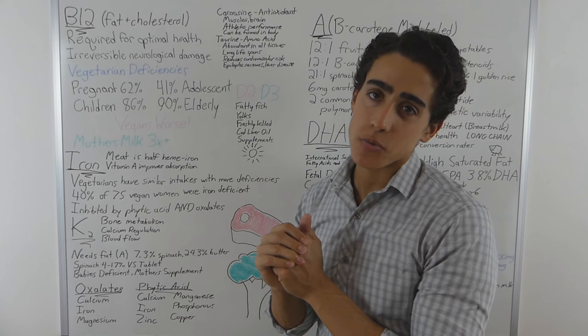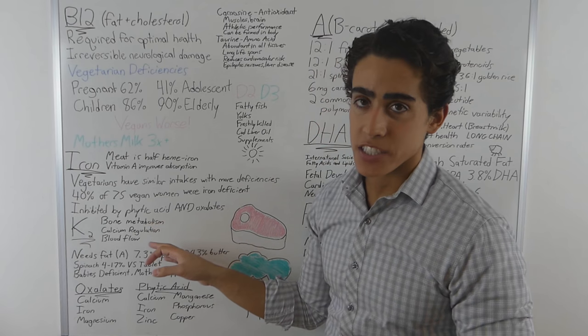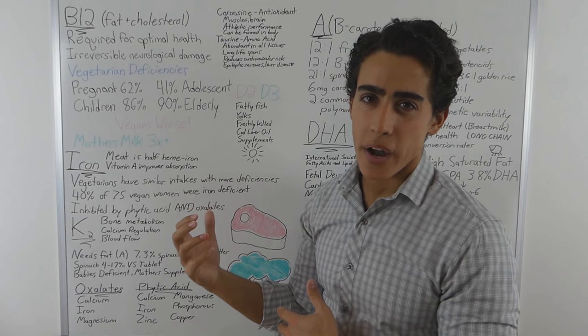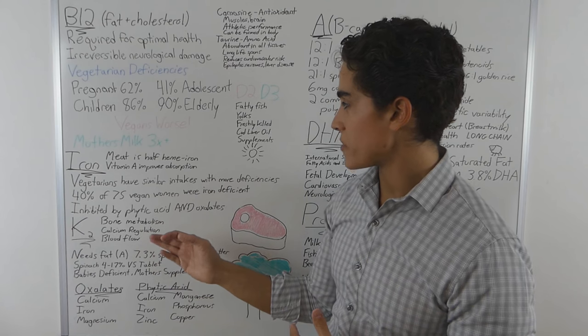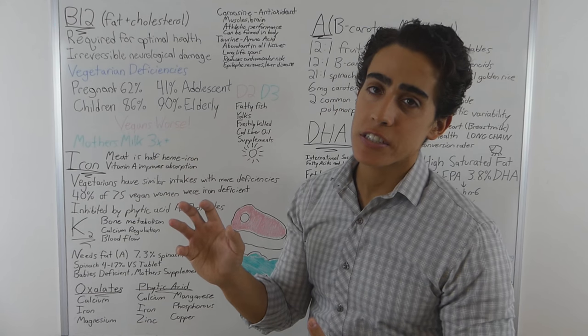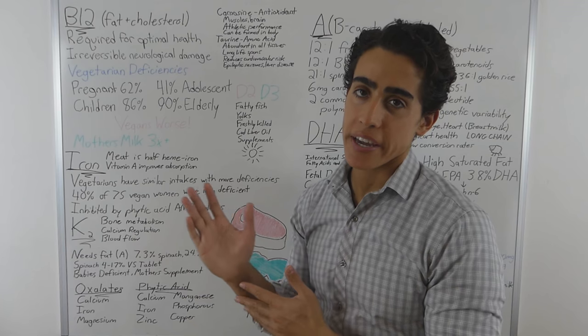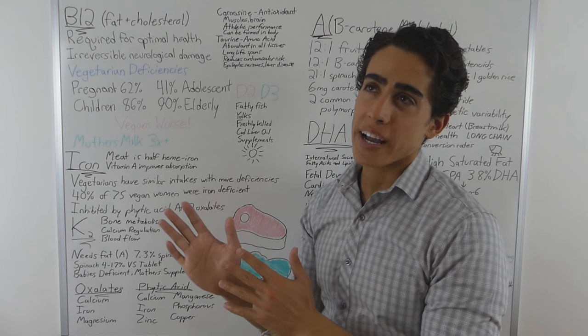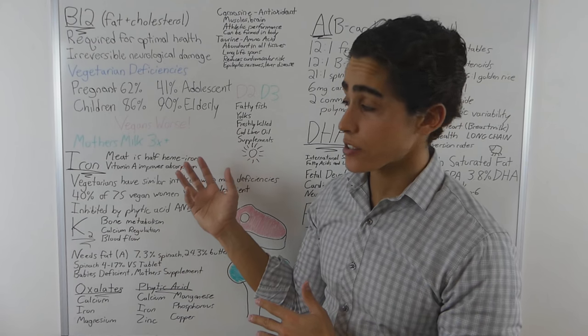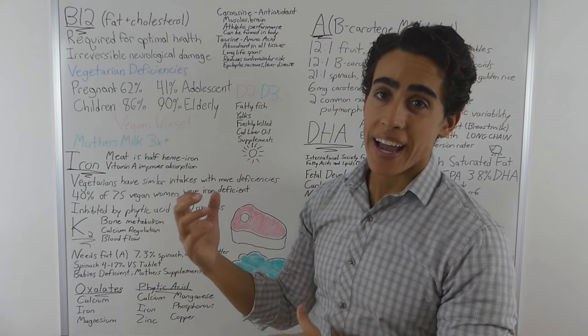Vitamin K2 is something that doesn't really get talked about a lot. It's very important for bone metabolism and calcium regulation, as well as blood flow. It thins the blood in a way, it's almost like a natural form of aspirin. And vitamin K2 and vitamin D3 are deficiencies so prevalent in the population, that's why the calcium RDA is so high. People think that if you put more calcium in your diet, your bones will be stronger, but no. Your body doesn't really need that much calcium. Your body needs vitamin K2 and vitamin D3 to absorb the calcium into the bones.